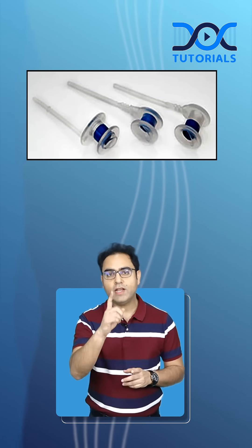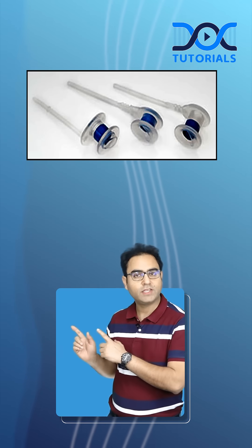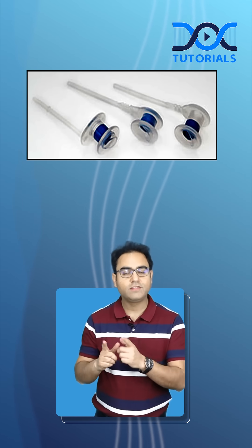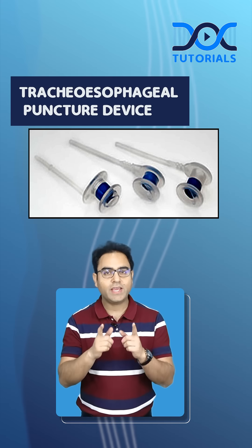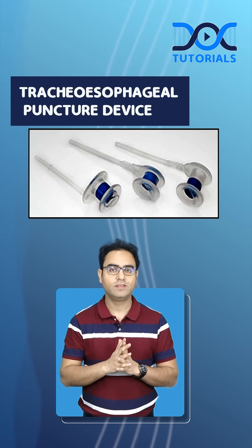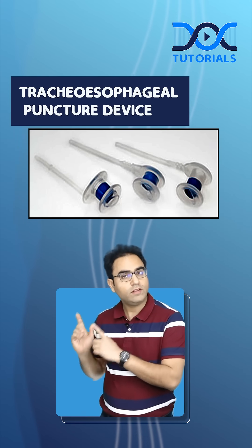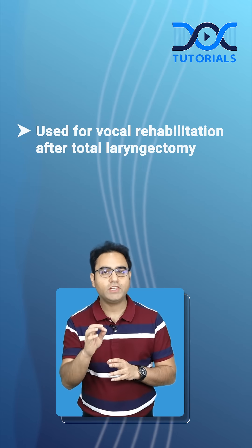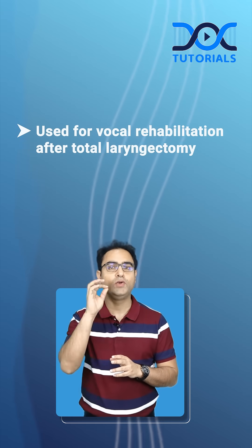Can you identify the device in the picture? Yes, this is a tracheoesophageal puncture device. What is this used for? This is used for vocal rehabilitation after total laryngectomy has been done.